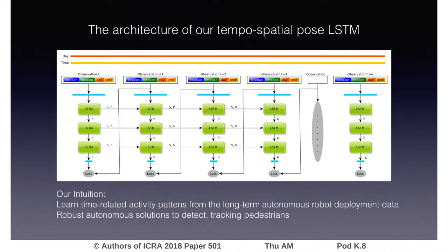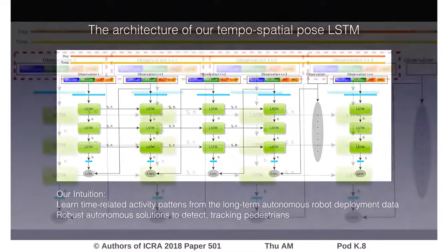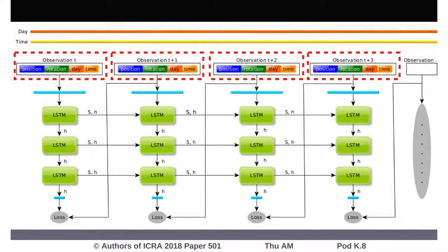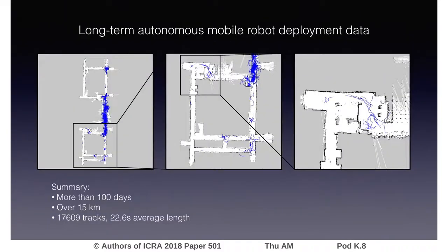In our approach, a triple-layer LSTM is trained in a sequence-to-sequence encoder-decoder form to predict future pedestrian poses. We include periodic time information in the training of human trajectories, and extend 2D position trajectory learning to 3-degree-of-freedom pose-trajectory learning. We train and evaluate our approach using more than 15 km of pedestrian trajectories recorded in a care home environment over a period of 3 months.